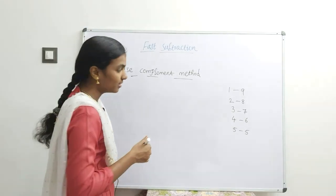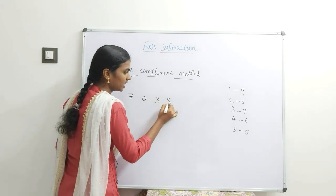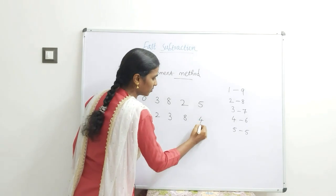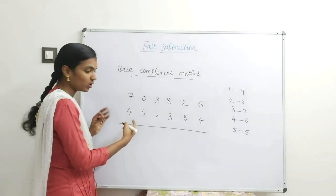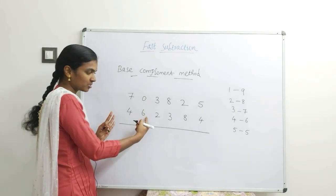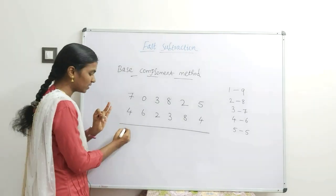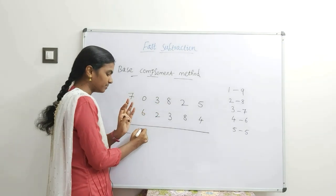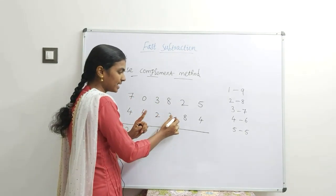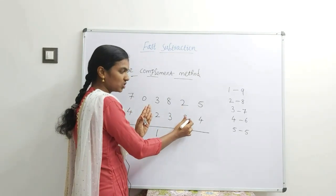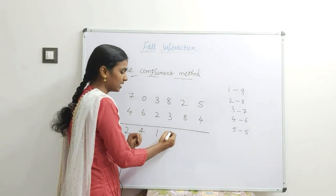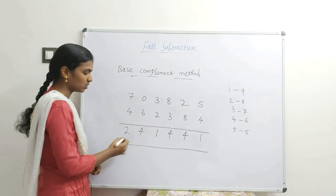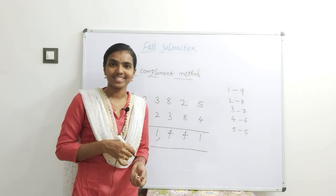One more example: 703825 minus 462841. Left to right: 7 minus 4 is 3 — but check next digit, not possible, so reduce: becomes 2. Complement of 6 is 4, and 4 plus 0 is 4. Then 3 minus 2 is 1 directly. 8 minus 3 is 5 — check next digit, not possible, reduce to 4. Complement of 8 is 2, and 2 plus 2 is 4. Then 5 minus 4 is 1. The answer is 241441.